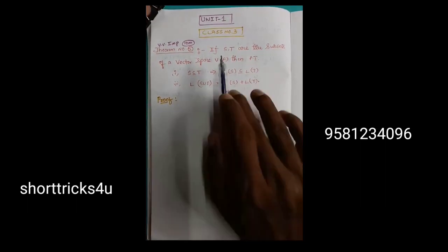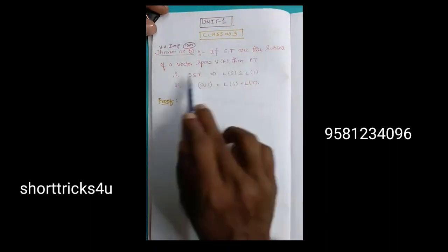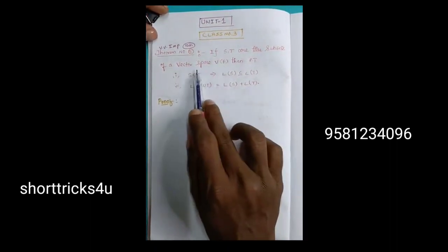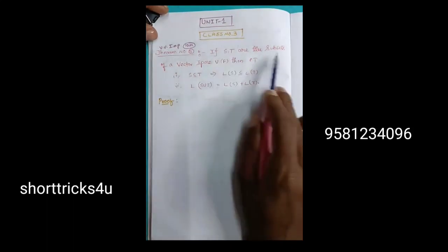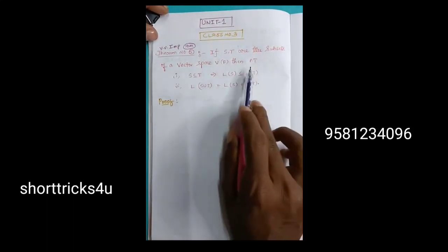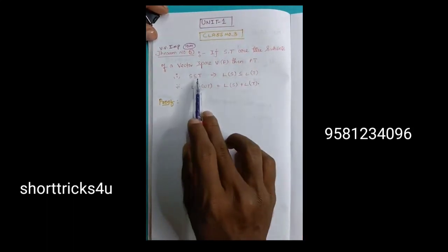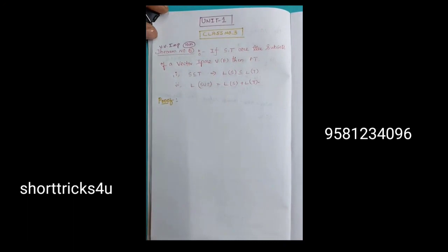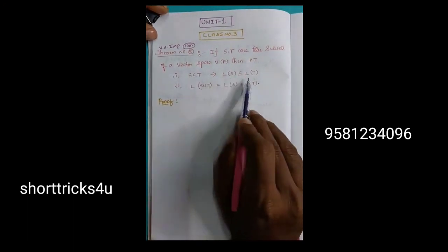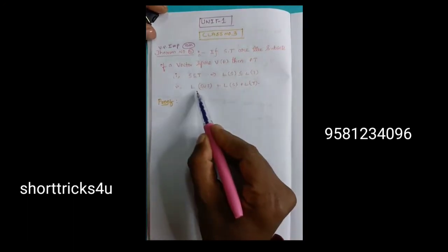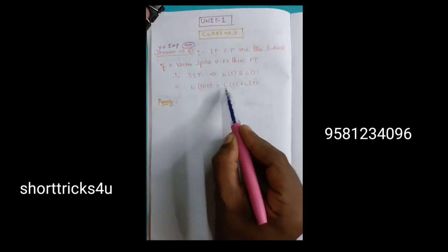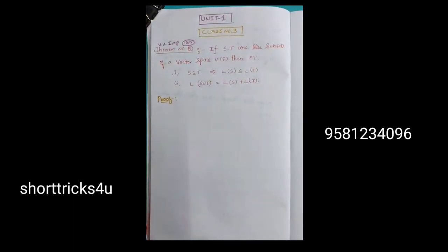We have S and T are the subsets of vector space V of F. If vector space V of F, S and T are the subsets of V of F. This will prove that S is contained in T implies L of S is contained in L of T.